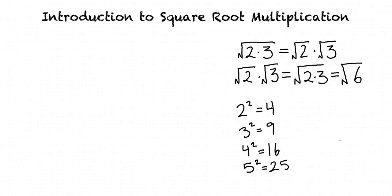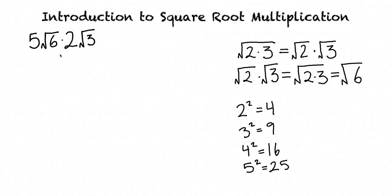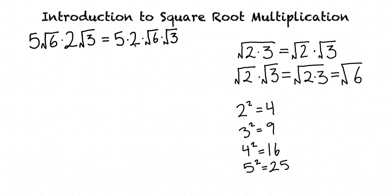Can we try another example? Sure. Let's try to simplify 5 times the square root of 6 times 2 times the square root of 3. Since all of these are multiplied with no other operations in between, we can first rearrange the factors so that the integers are grouped and the square roots are grouped. We can rewrite this as 5 times 2 times the square root of 6 times the square root of 3, using the commutative property of multiplication. Then we can multiply 5 times 2 to get 10, and the square root of 6 times the square root of 3 to get the square root of 18, so our expression becomes 10 times the square root of 18.